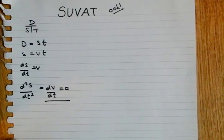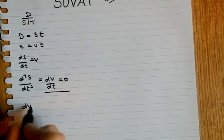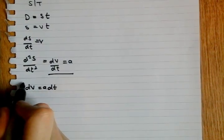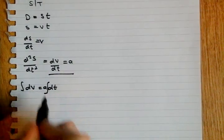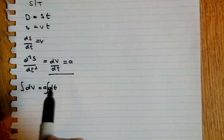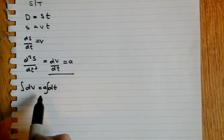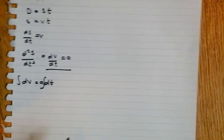Now, rearranging this part, we'll get dV is equal to A dT. And then we just integrate both sides. A doesn't affect T, T doesn't affect A, so A can be pulled outside the integration.